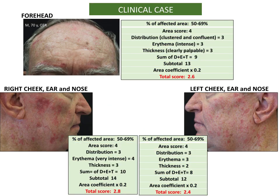Another example is a man with no involvement of the scalp but with an affected area between 50 and 69%, with clustered and confluent AK lesions, clearly palpable and with an intense or very intense erythema. In this patient, the total ACASY is 7.8, which is considered a moderate to severe case.